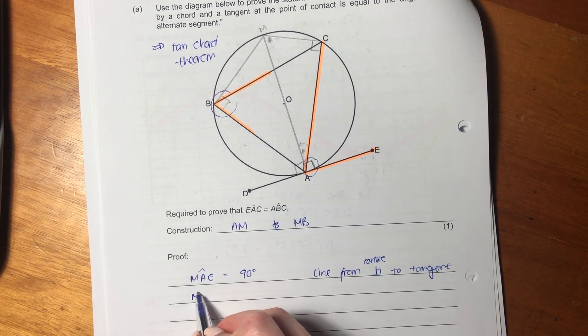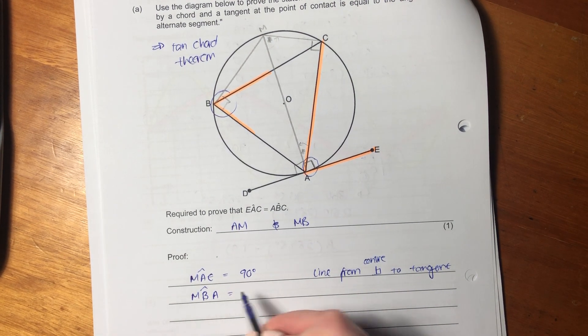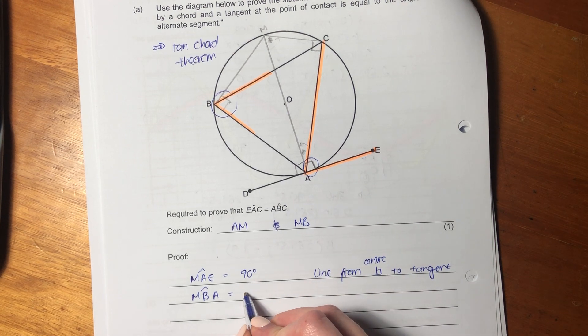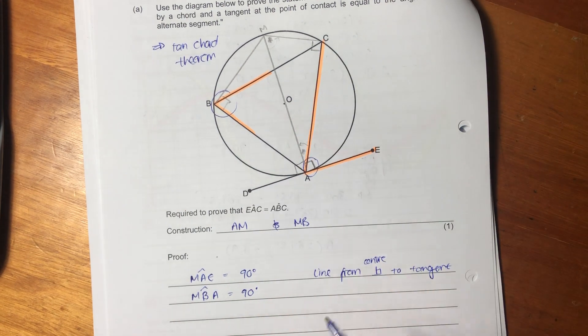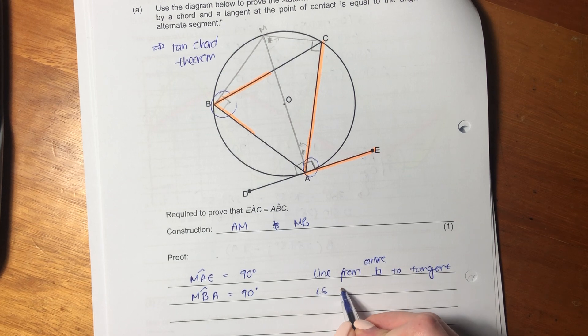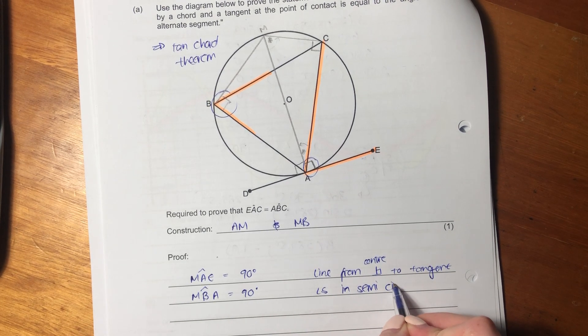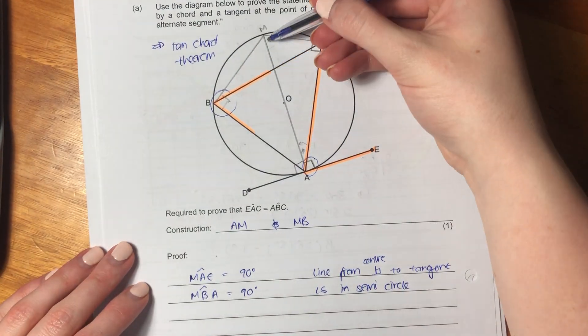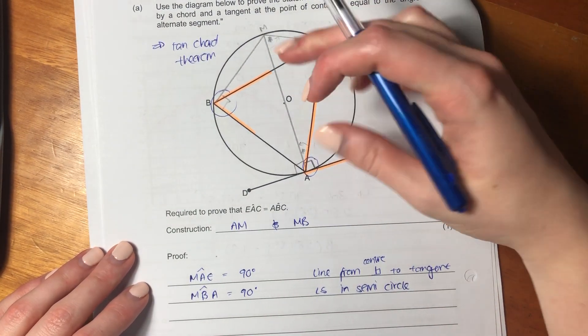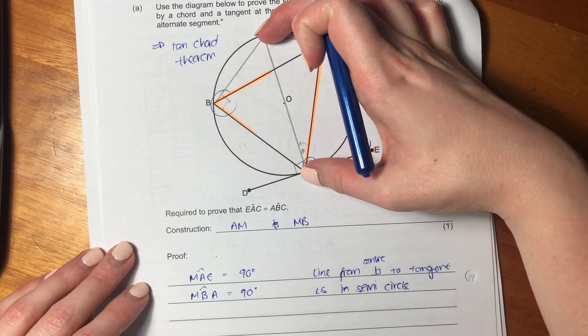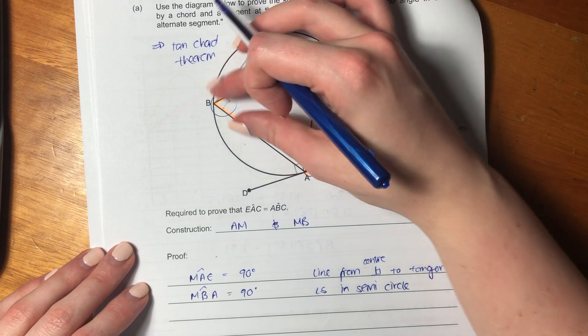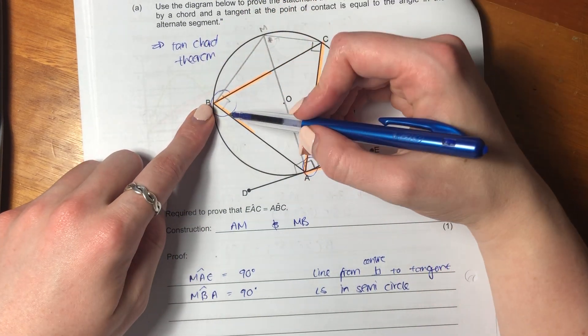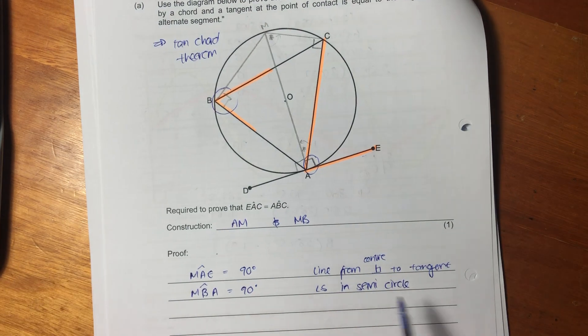But we also know that MBA, not an MBA in like the Masters of Business Administration, MBA in the angle here, is 90 degrees because of angles in a semicircle. Because you know that this is what I've drawn through here is actually diameter. It goes through the center, goes from one side to the other side, it's a diameter. So this is a semicircle. We know that any angle of a triangle that then hits the circumference of the circle is going to be 90 degrees.